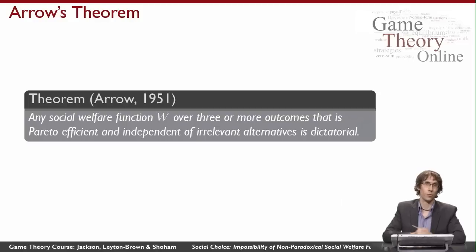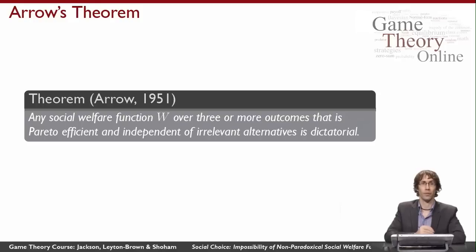Since we can't possibly live with a dictatorial social welfare function, what that really means is that we have to give up either Pareto efficiency or independence of irrelevant alternatives — and that's pretty bad news, because these are both pretty natural things.